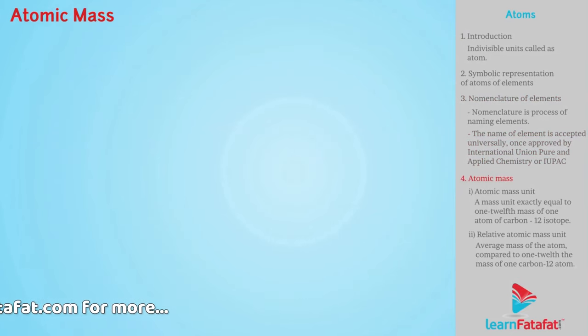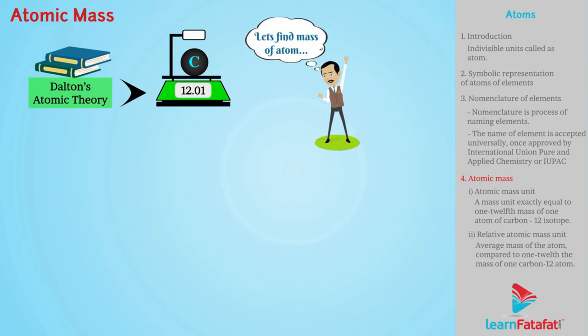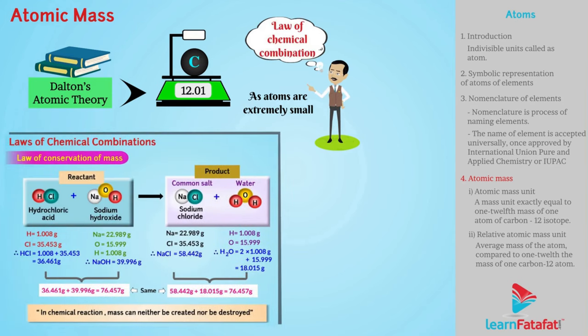Atomic mass. Dalton's atomic theory stated that every atom has specific mass. So, scientists were curious to find mass of atoms. As atoms are extremely small, earlier, scientists found it difficult to measure mass of atoms. So, they use the law of chemical combination.